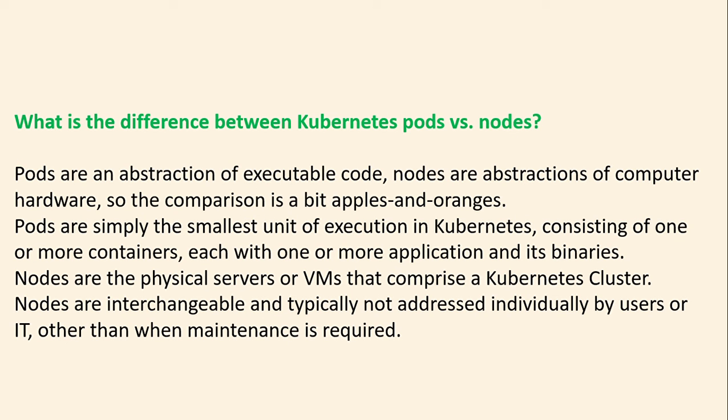Continuing the difference between pods and nodes: pods are an abstraction of executable code; nodes are an abstraction of computer hardware — so the comparison is a bit apples and oranges. Pods are simply the smallest unit of execution in Kubernetes, consisting of one or more containers each with one or more applications and its binaries. Nodes are the physical servers or VMs that comprise the Kubernetes cluster. Nodes are interchangeable and typically not accessible individually by users, other than when maintenance is required.